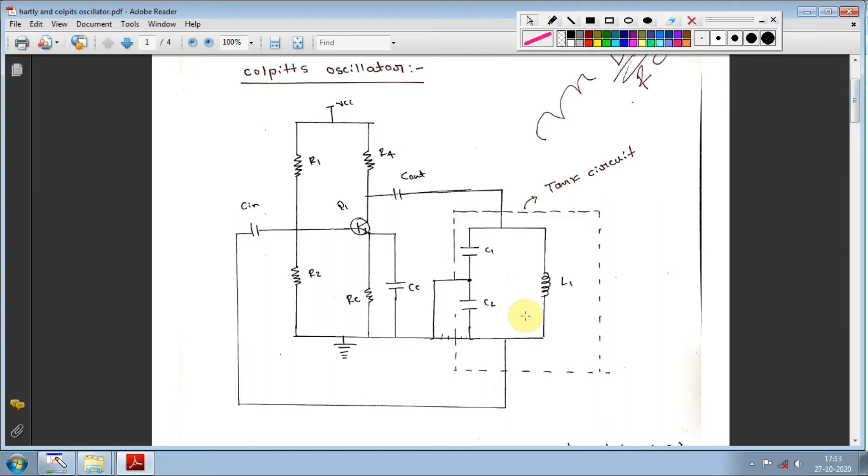The tank circuit is what produces waves in an oscillator. In Colpits oscillator, two capacitors are in series with one inductor in parallel. In Hartley oscillator, it's the opposite - two inductors are in series with one capacitor in parallel. If you see inductors together, it's Hartley; if you see capacitors together, it's Colpits.